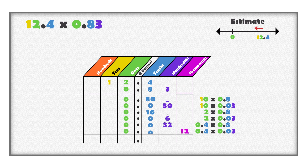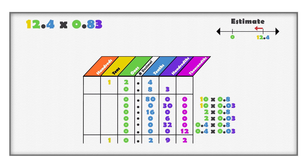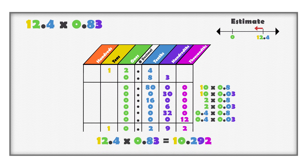Remember, when adding decimals, always add together digits of the same place value. There are 12 thousandths, 68 hundredths, 96 tenths, and 0 ones. One group of 10 thousandths is 1 hundredth; 12 thousandths is the same as 1 hundredth and 2 thousandths. We already have 68 hundredths; one more makes a total of 69 hundredths. One group of 10 hundredths is 1 tenth; 69 hundredths is the same as 6 tenths and 9 hundredths. We already have 96 tenths; six more makes a total of 102 tenths. One hundred two tenths is the same as 10 and 2 tenths. The product is 10 and 292 thousandths.